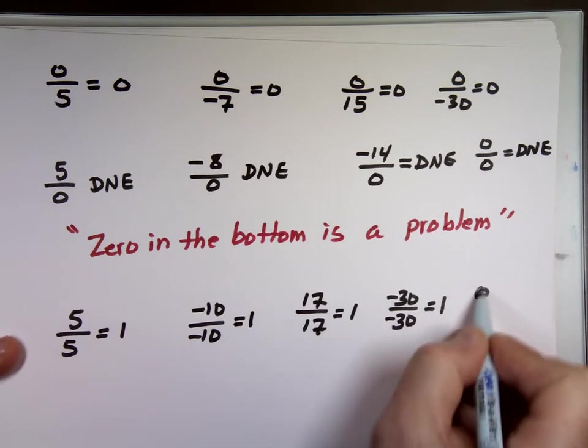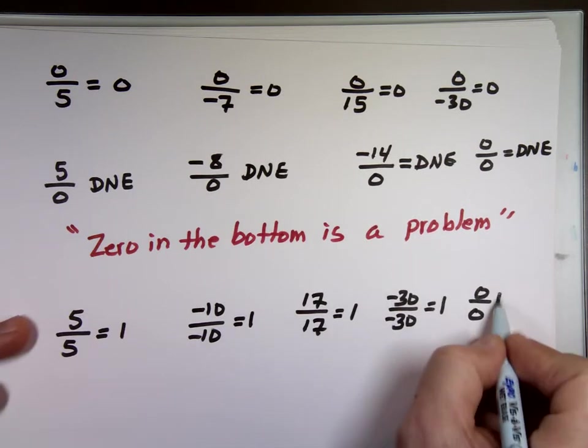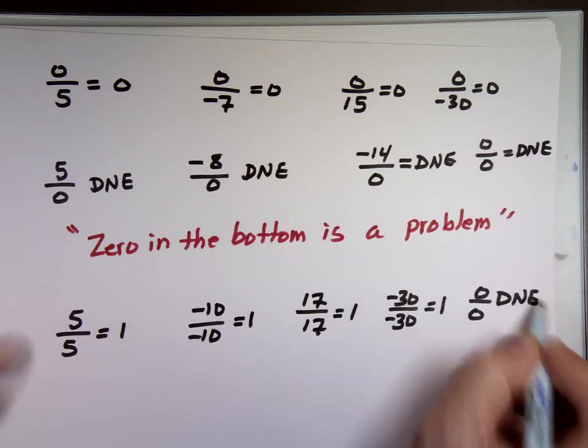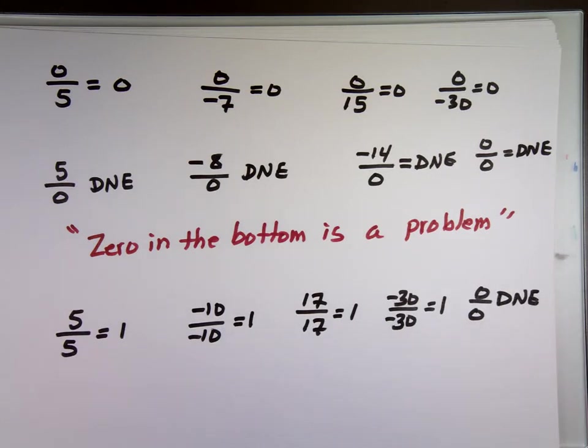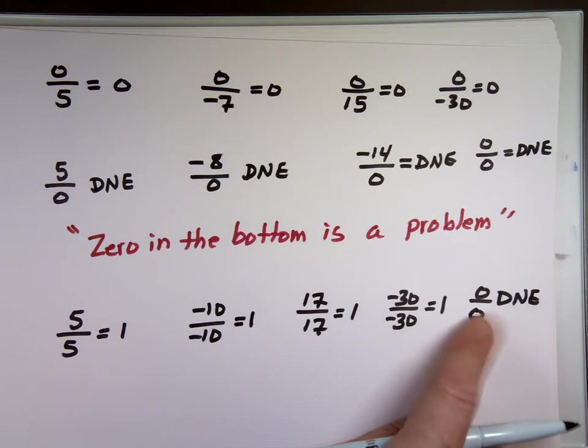What's zero over zero? It can be done. Very good. Does not exist. So any number divided by itself is one except zero on the bottom. This one.